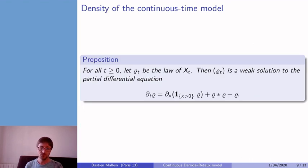So we can compute the density ρₜ of the Derrida-Retaux model at time t, and we can observe that it is the weak solution to an interesting partial differential equation, which is the derivative in time of ρ is equal to the derivative in space of ρ indicator function that x is positive.